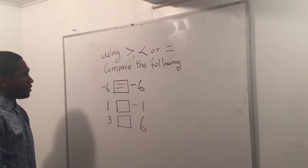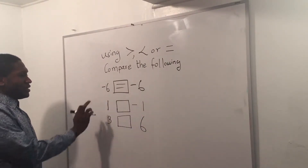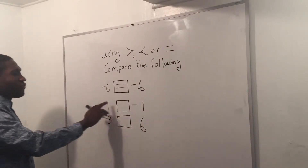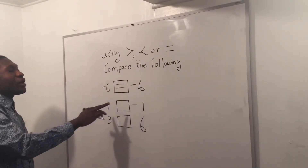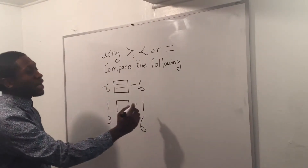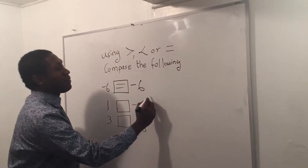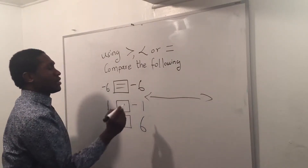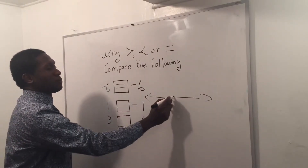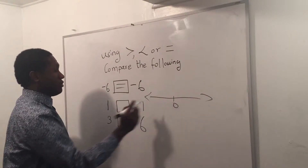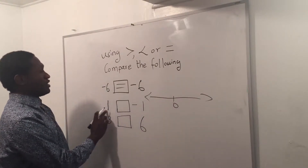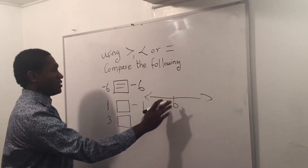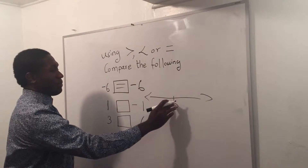What about this one? There are two different numbers, and when I have two different numbers I always have to use a number line. Let me do a number line really quick. I'm supposed to have a zero and I have to make sure that these numbers are on the number line.